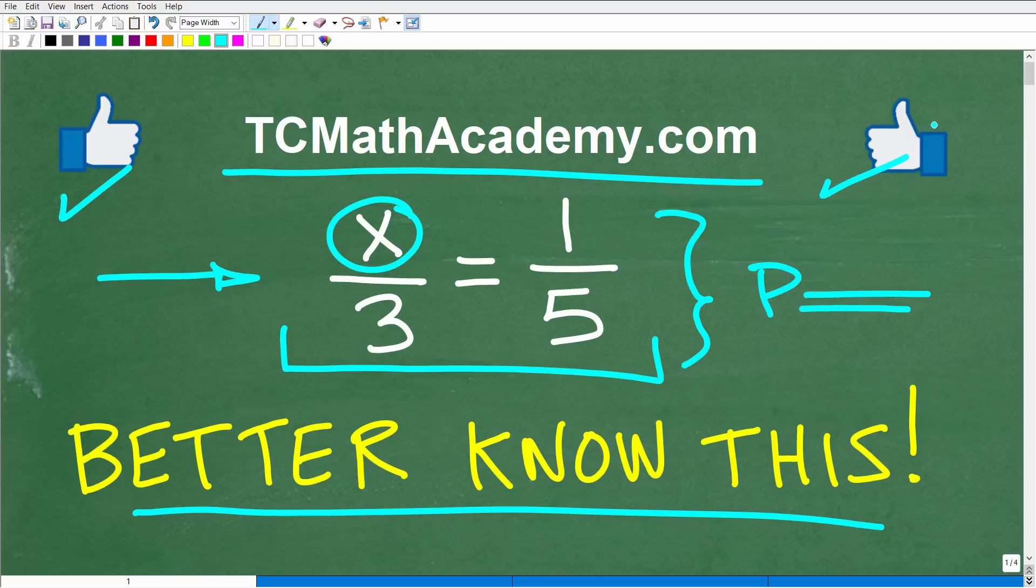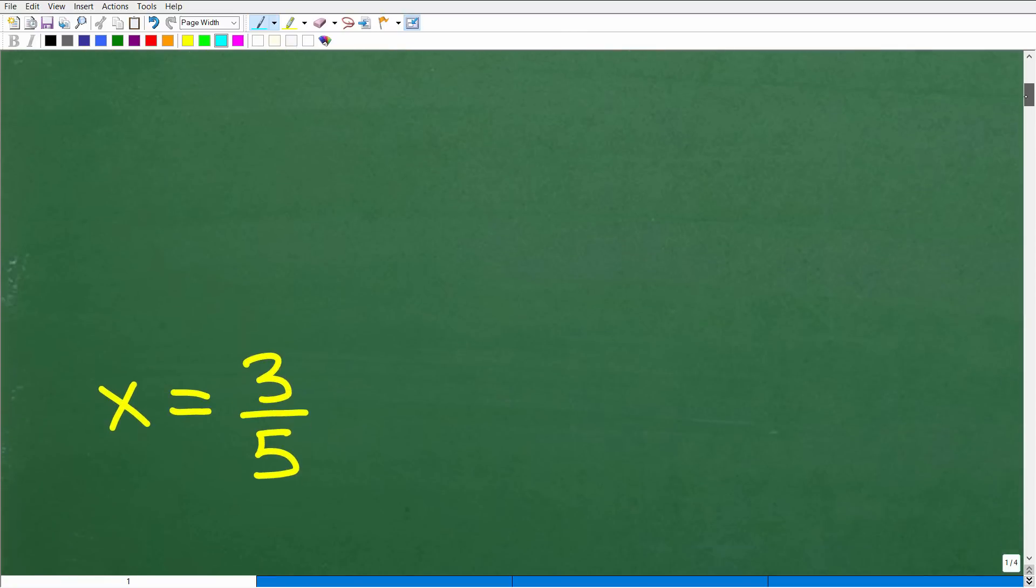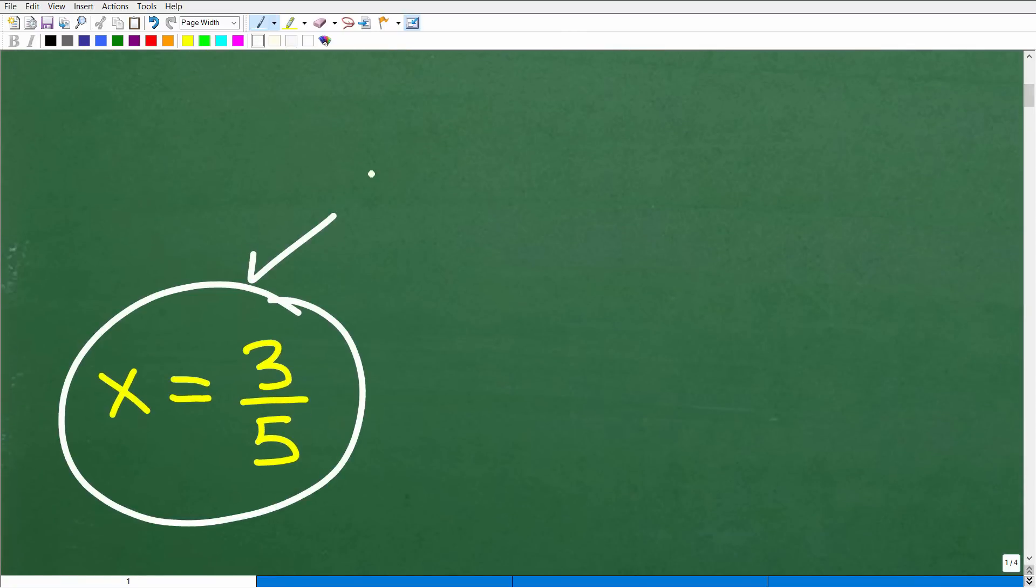Okay, so let's take a look at the answer here. Again, we have x over 3 is equal to 1 over 5. What is x equal to? Well, x is equal to 3 fifths. Okay, so that's the first part of this question that I asked, because I asked you two questions.